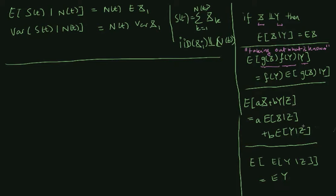The next rule we will use is that conditional expectation is linear. That means that if I take the mean value of a linear combination of stochastic variables given something, it is the same as taking the conditional expectation inside the linear combination. So linearity is also something we will use.